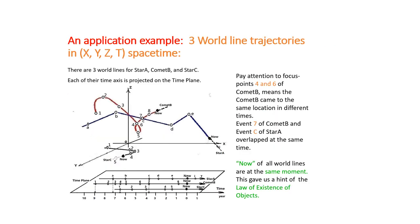An application example: three world line trajectories in XYZT spacetime. There are three world lines for star A, comet B, and star C. Each of their time axis is projected on the time plane. Pay attention to focus points 4 and 6 of comet B. This means the comet B came to the same location in different times. Event C of comet B and event C of star A overlapped at the same time. Now, of all world lines are at the same moment, this gave us a hint of the law of existence of objects.